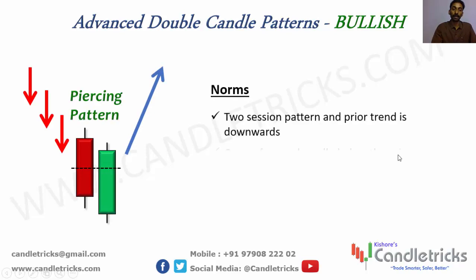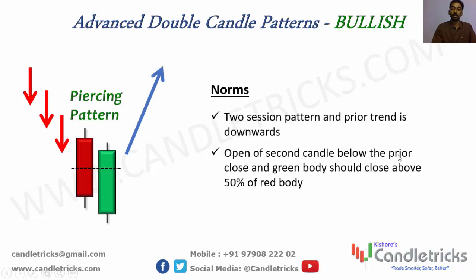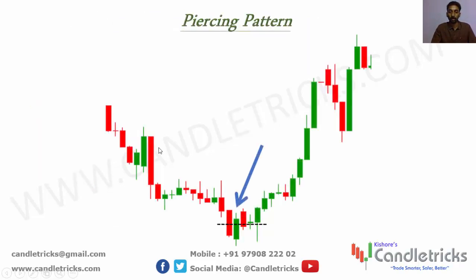Double candle bullish patterns — first one is the piercing pattern. First candle always red, second candle always green. The second candle opens below the first candle's close and closes above 50% of the first candle's real body. We call it piercing pattern. After a downward movement, the green candle closes above 50% of the first candle's real body. People enter above either candle's high, and after that the price moves upward.